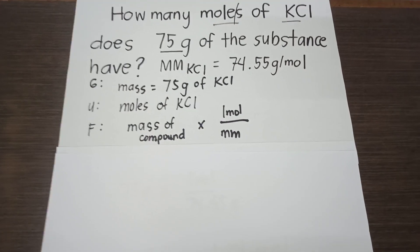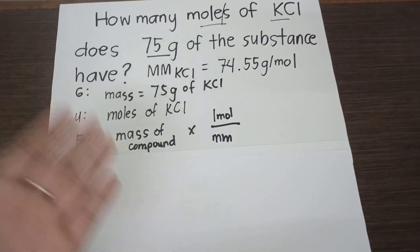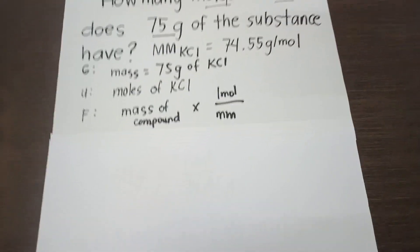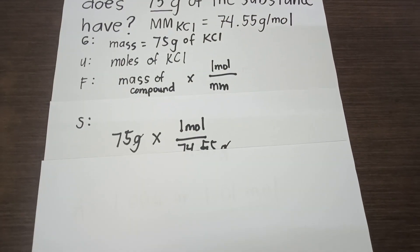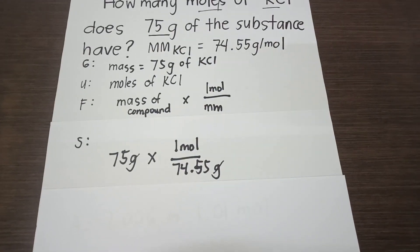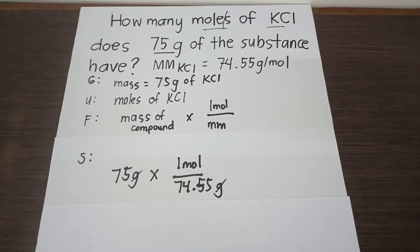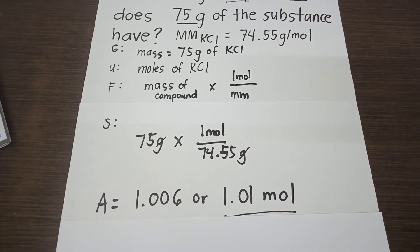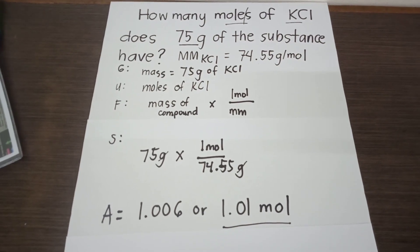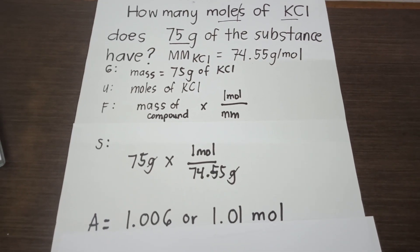For the solution, we substitute the given values: 75 grams of KCl times 1 mole over 74.55 grams. The answer is 1.006 or approximately 1.01 moles. When solving a problem, we use the GUFSA format: Given, Unknown, Formula, Solution, and Final Answer.